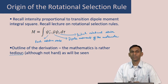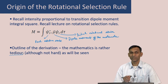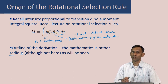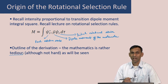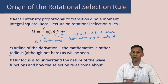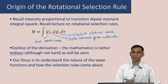We will now outline the derivation of this selection rule, and keep in mind that the mathematics is rather tedious. By tedious, I mean that it is not really hard, but there are a lot of steps and it will take a long time. So, in the interest of time, I will show you how the derivation works and not go through every step of it. Our focus is to understand the nature of the wave function and how the rotational selection rule comes about.